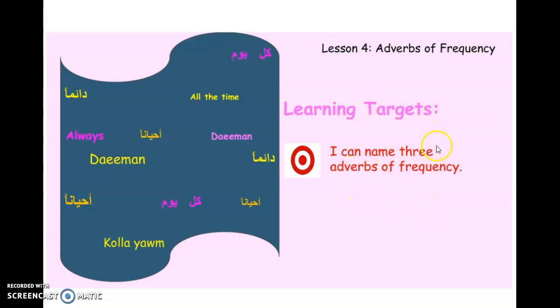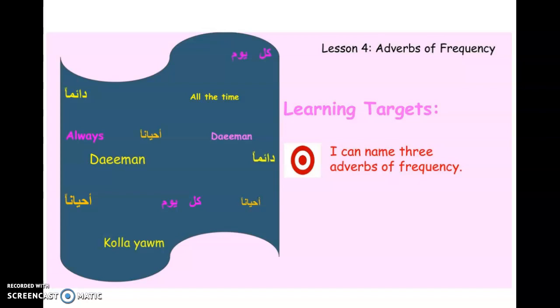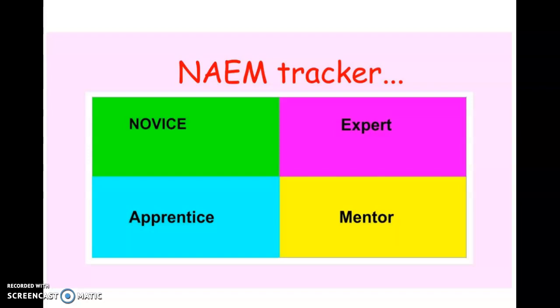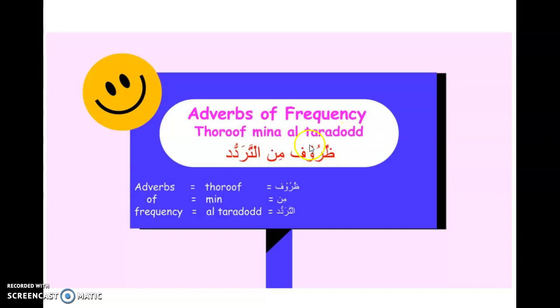Our learning target is: I can name three adverbs of frequency. In English, those are all the time, always, and every day. In Arabic, the adverbs of frequency are called dhuroof mina al-taraddud — you don't need to know this term, but I wanted to show it to you. Dhuroof mina al-taraddud.